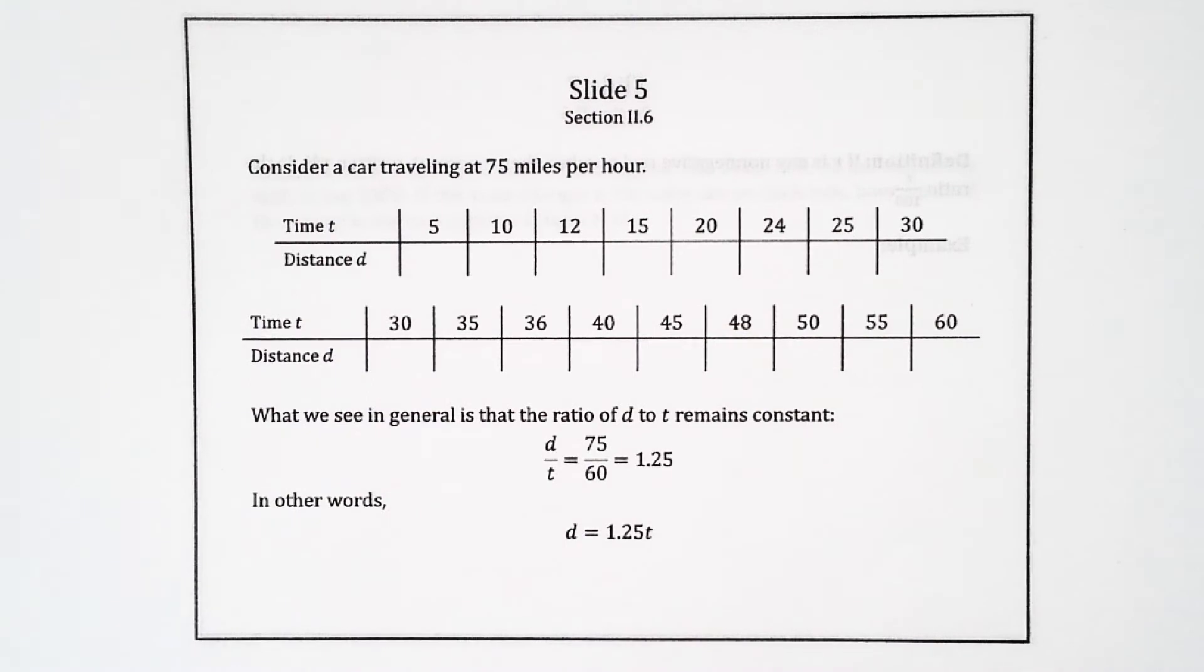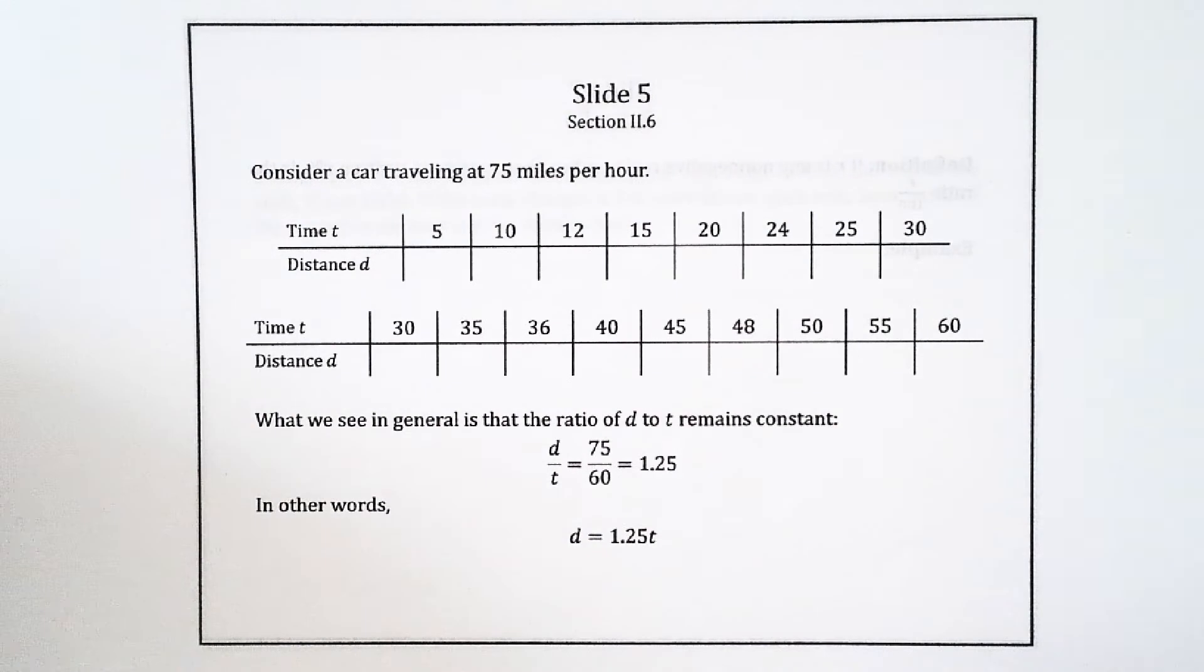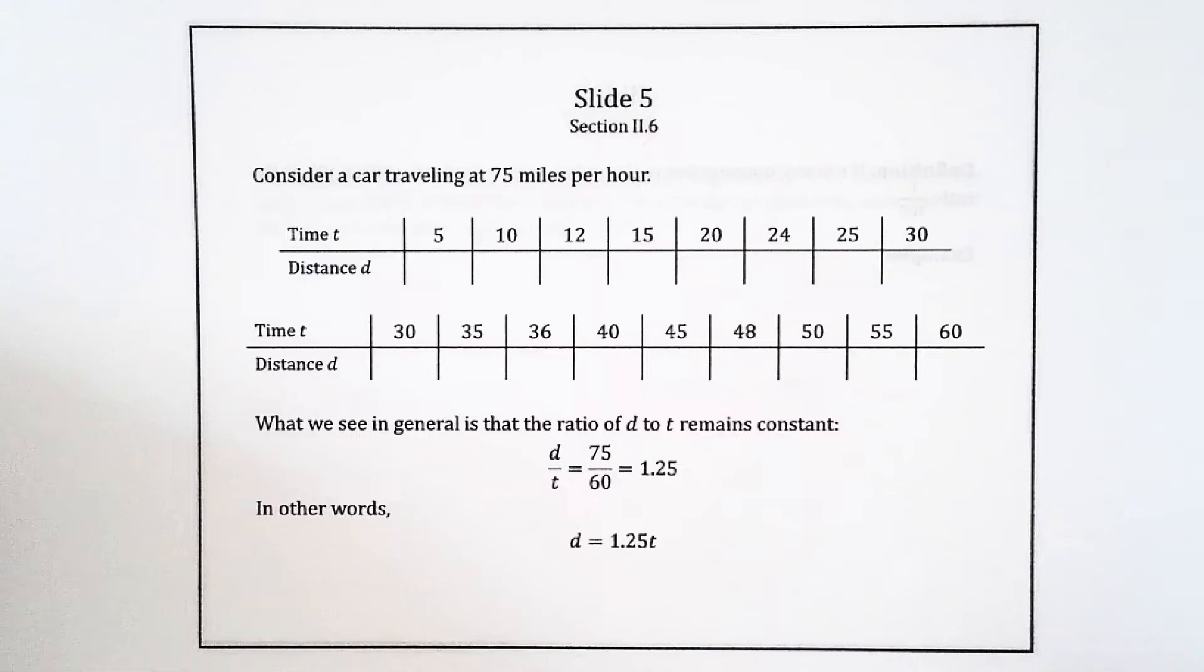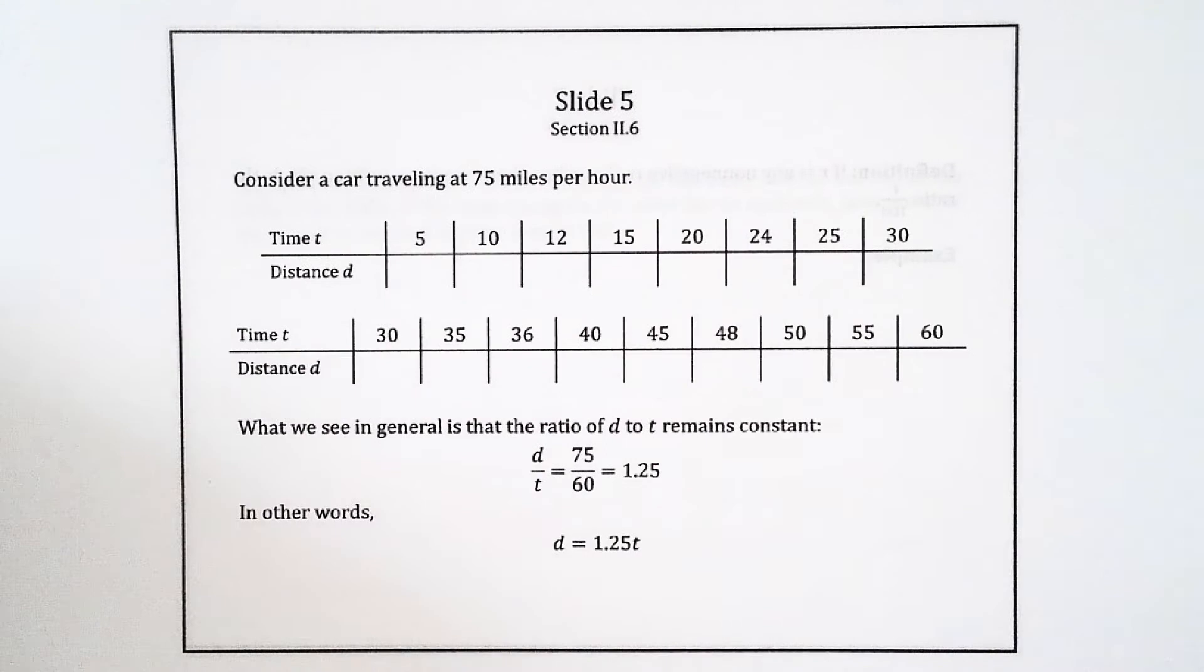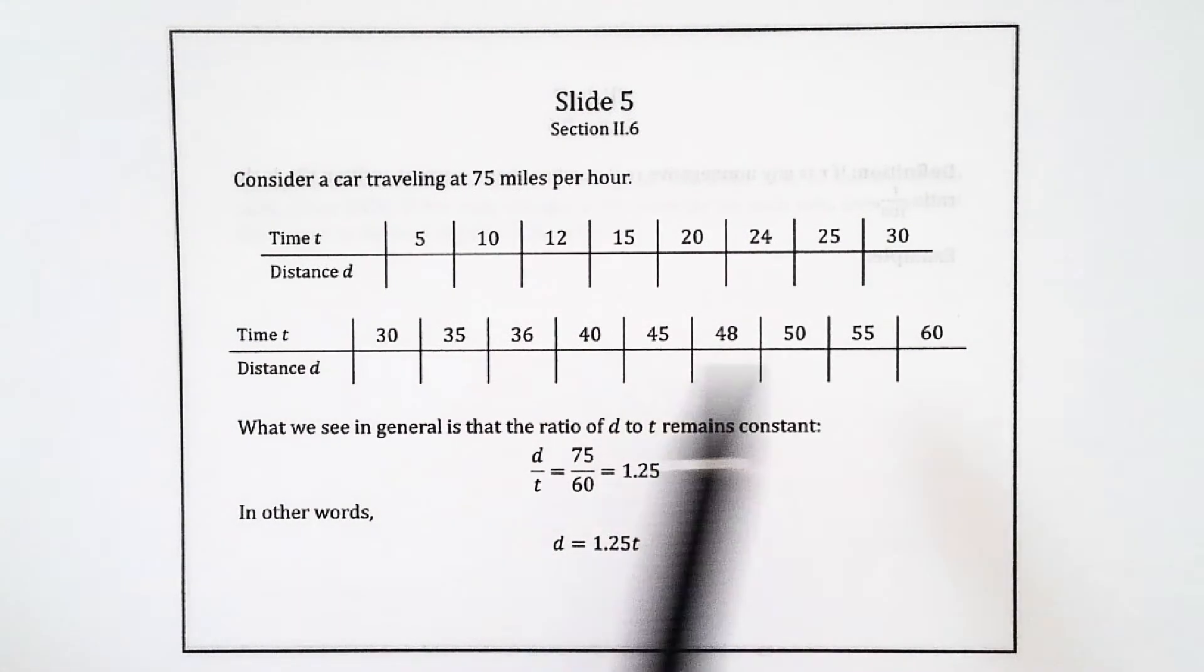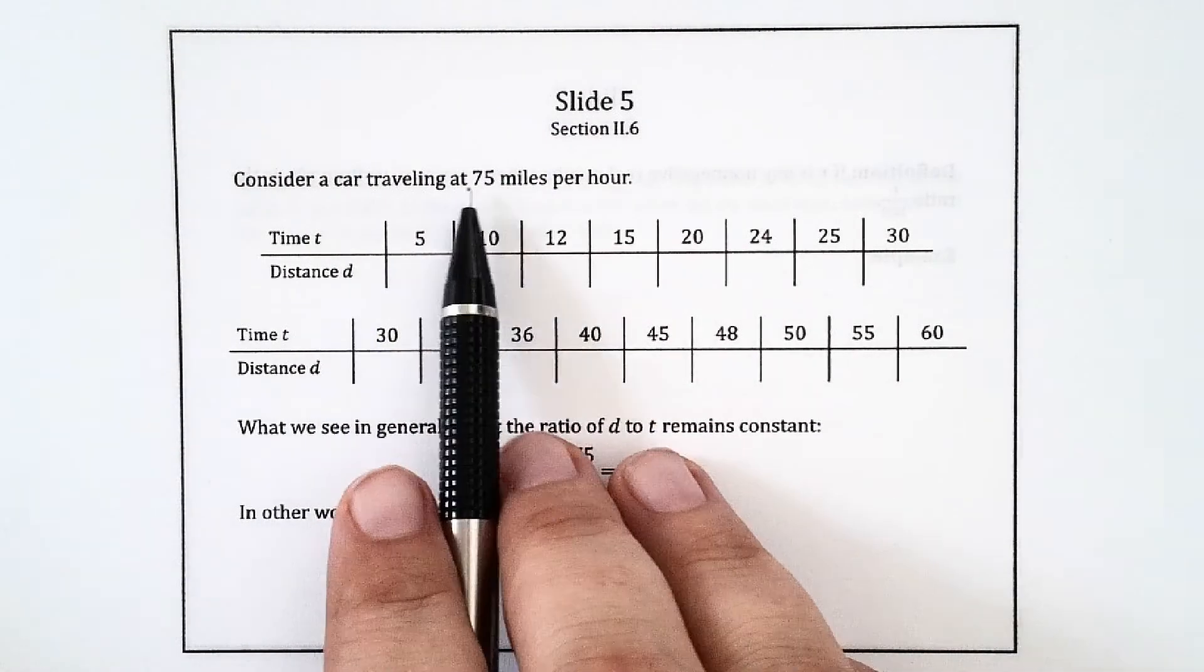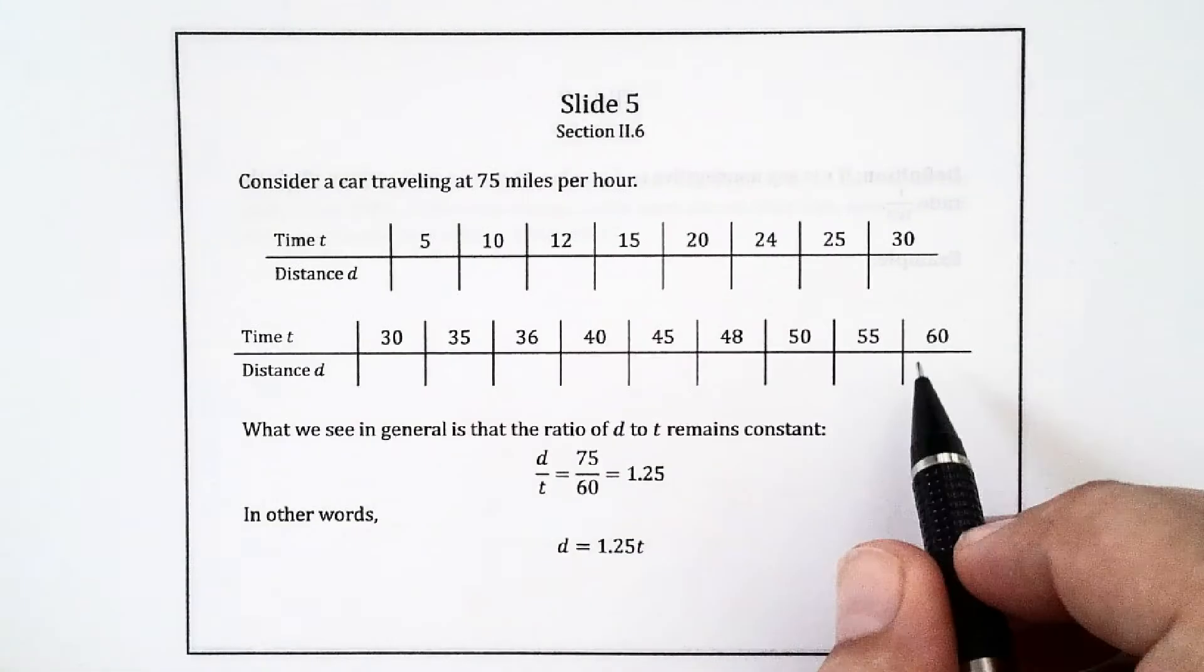Consider a car traveling at 75 miles per hour. We have a chart here that I'm going to fill out, at least partially. The time t is supposed to be in minutes, incidentally. We're going 75 miles per hour, so in 60 minutes, that's one hour, we've gone 75 miles.